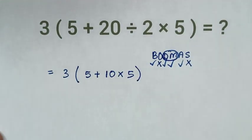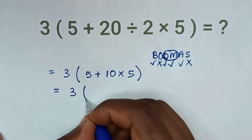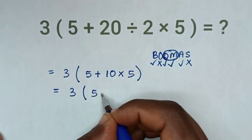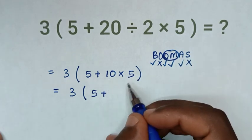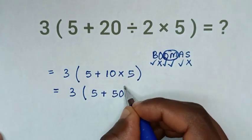So it will be equal to 3 bracket 5 plus 10 times 5 is 50 bracket.